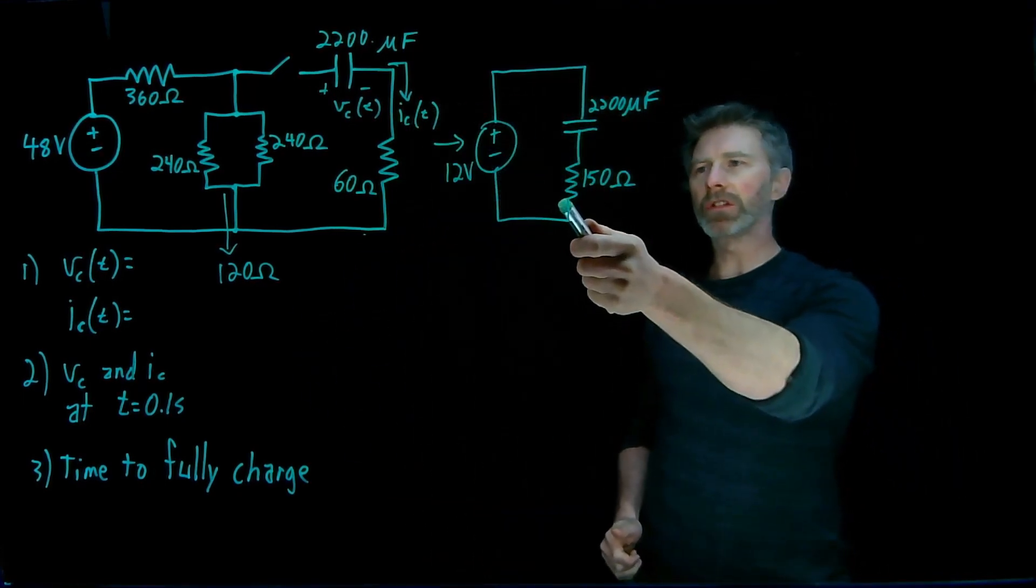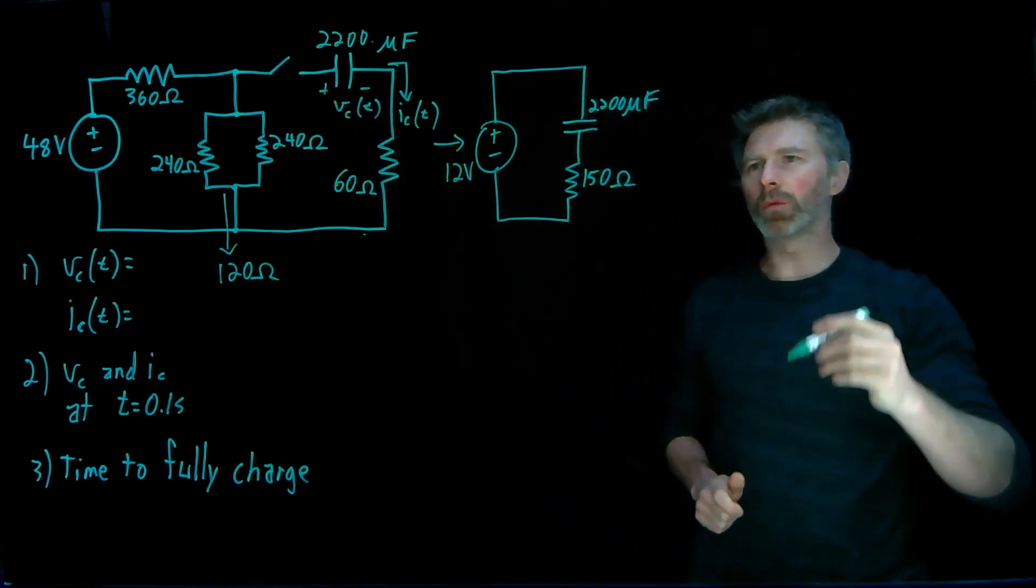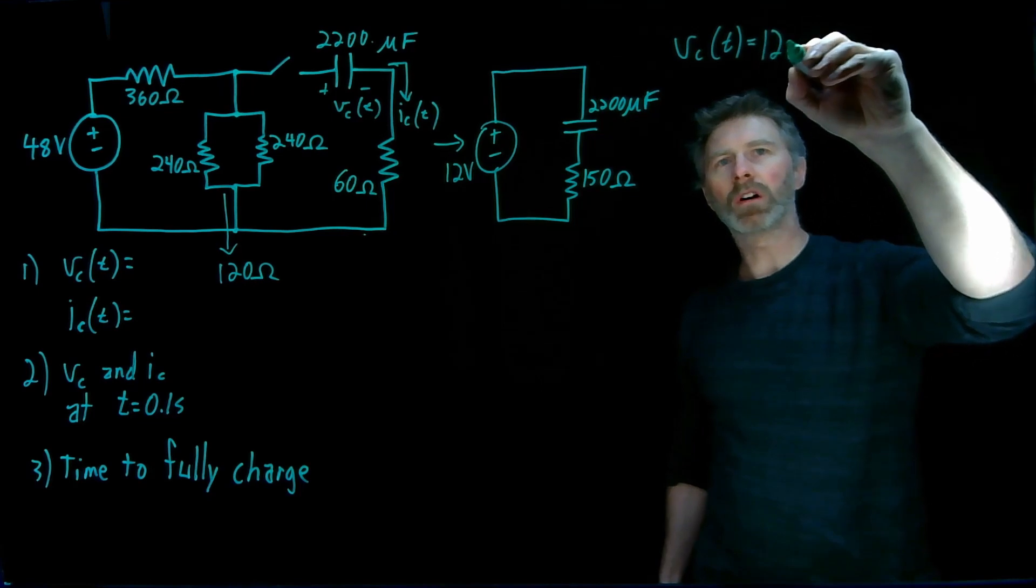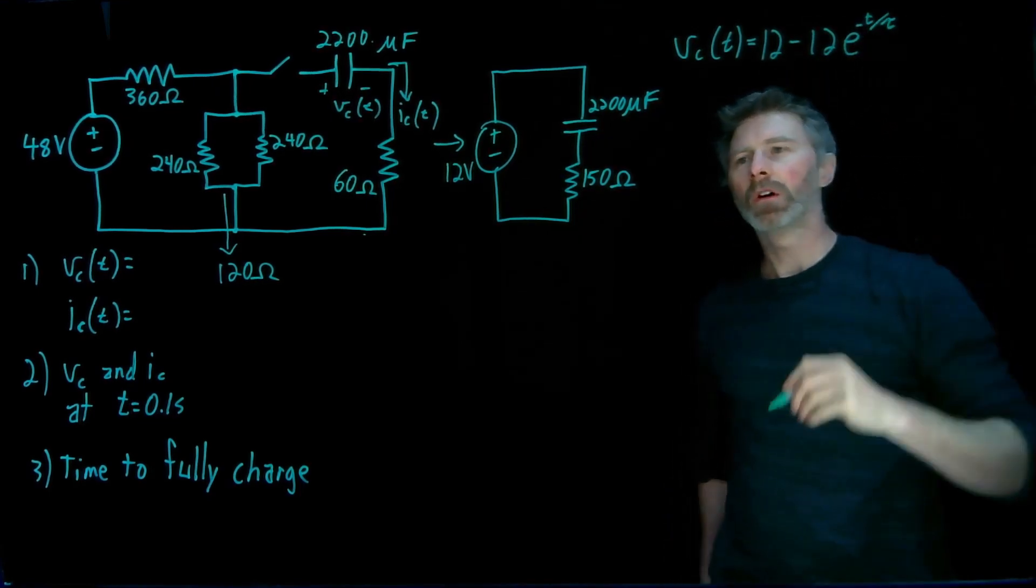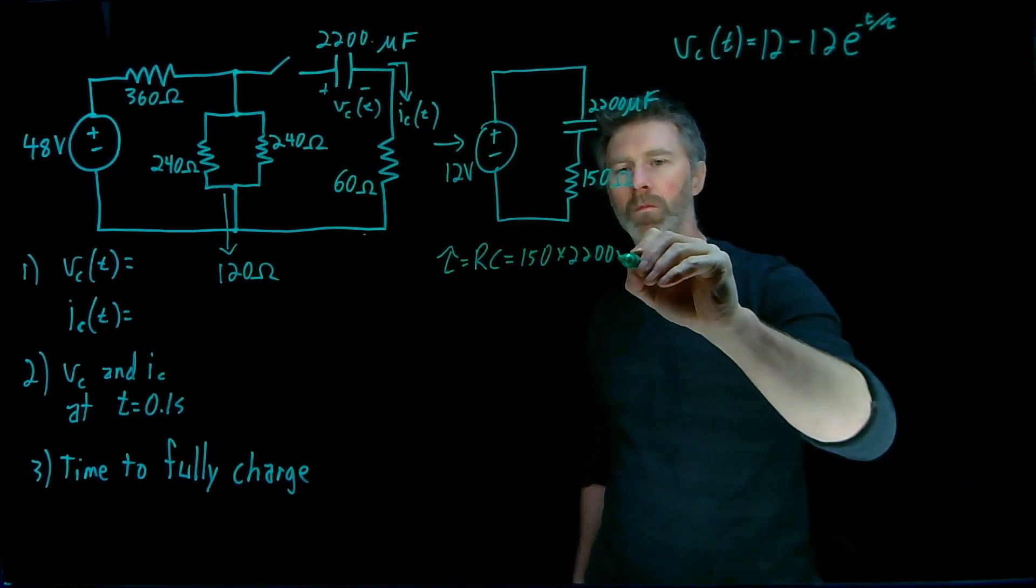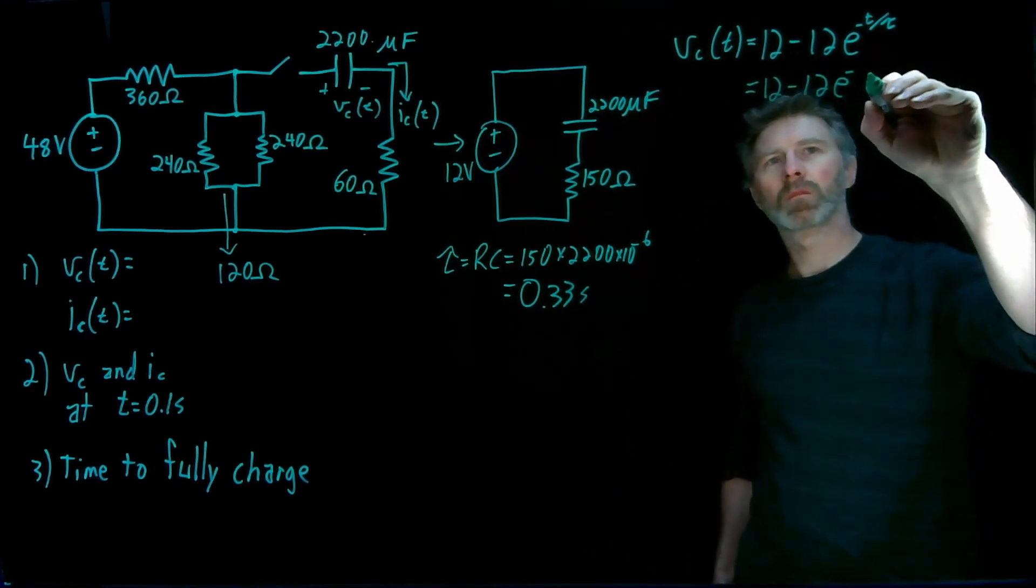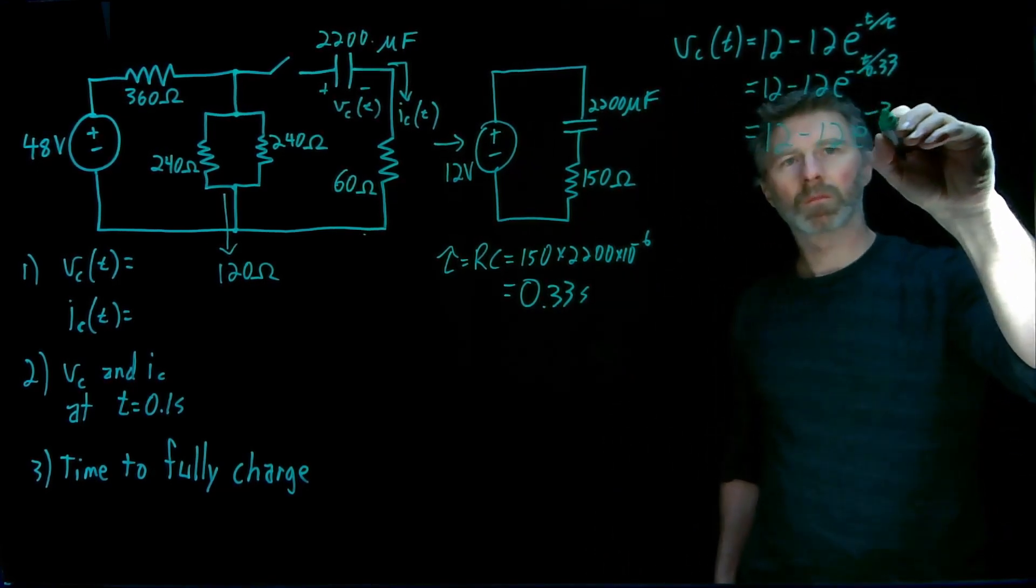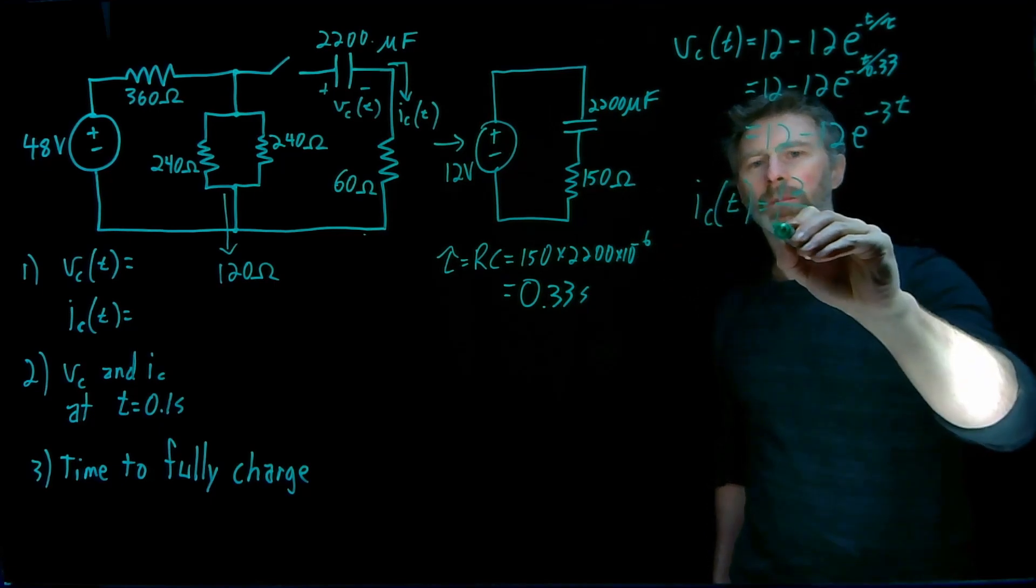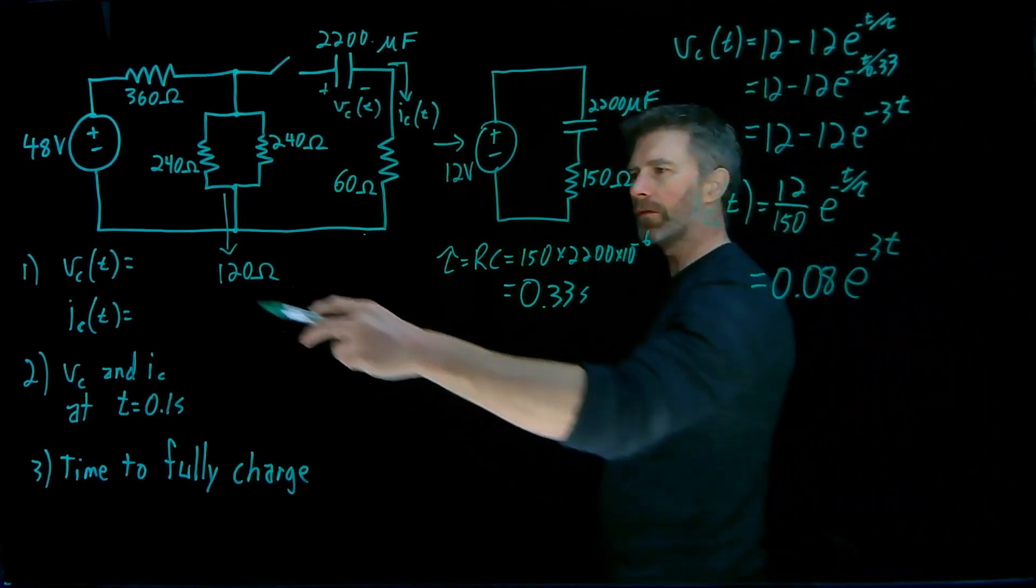I've redrawn the thevenin equivalent circuit that the capacitor sees from this particular circuit. And now we're in that standard form, so it's pretty easy to figure out what the voltage equation is. It's a charging capacitor, so it's going to be 12 minus 12 e to the negative t over tau. Well, tau, that's an important number to know. R times C, 0.33 seconds. And the current, well, that'll be 12 over 150. So there's my two equations for vc of t and ic of t.